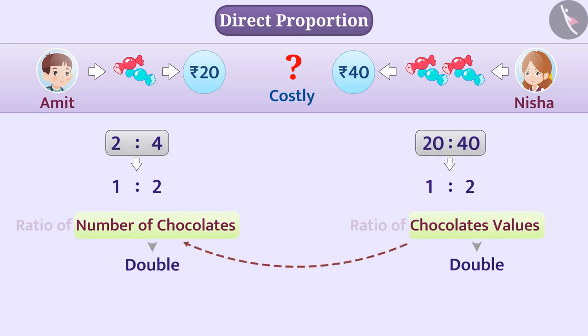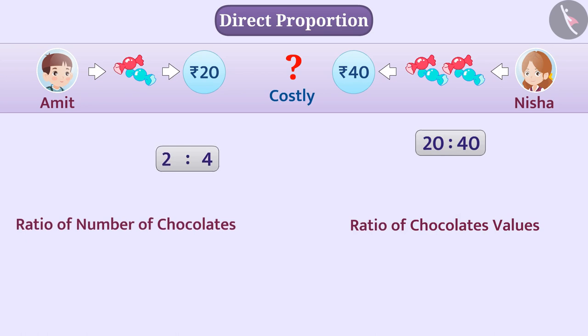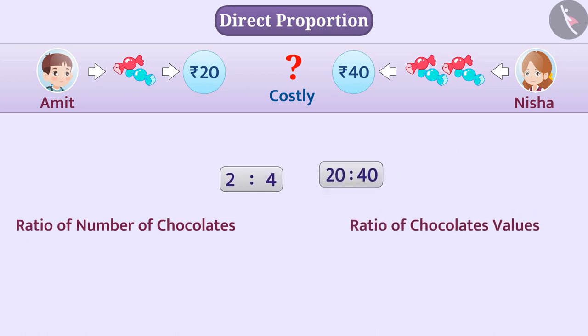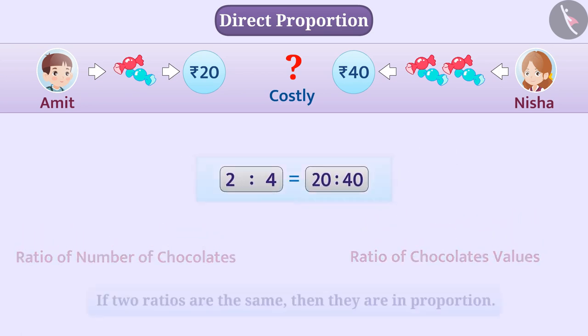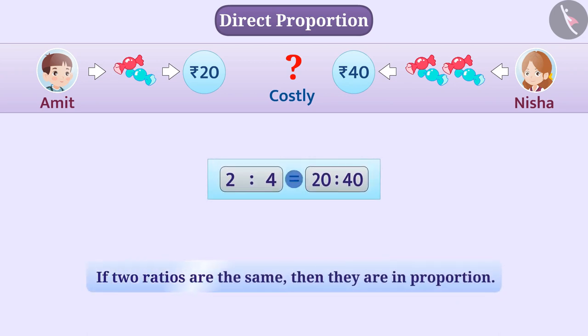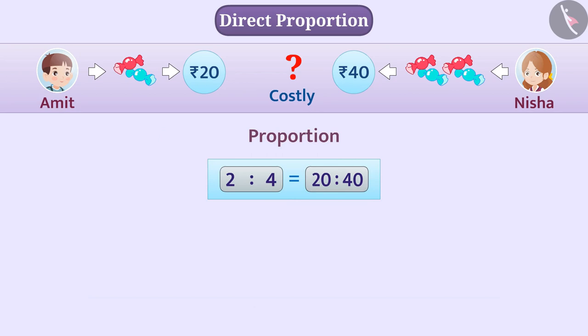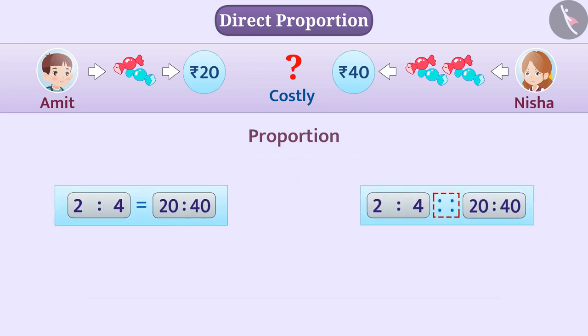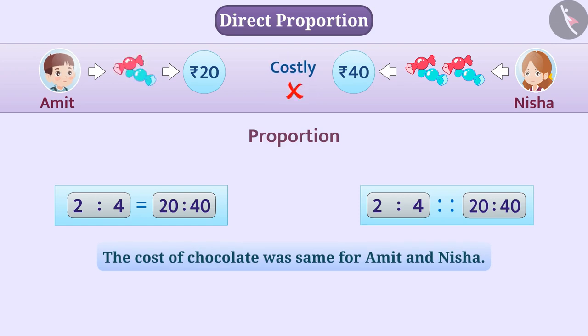We can say that here, the ratio of number of chocolates and the ratio of their values is the same. In this way, if two ratios are the same, then they are in proportion. To indicate equality in ratios, use this sign or this sign. On the basis of proportional relationship, we can say that the cost of chocolate was same for both Amit and Nisha.